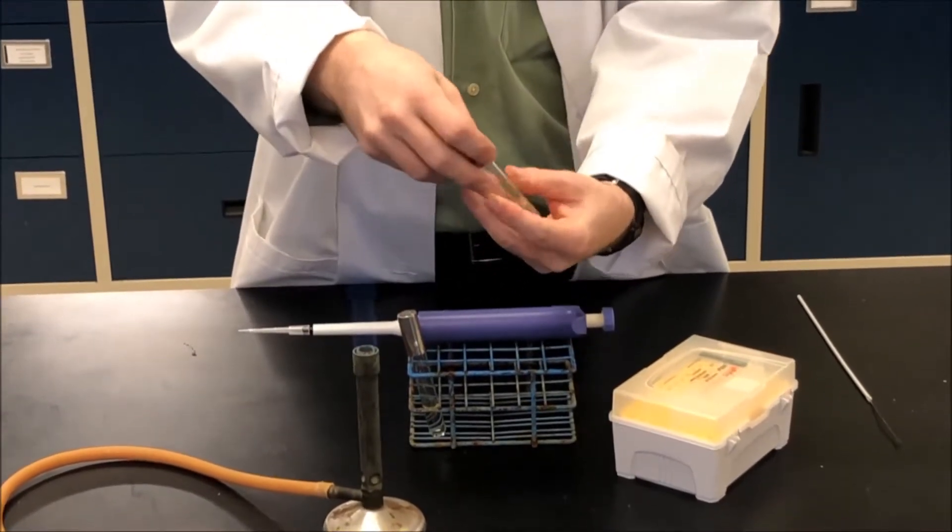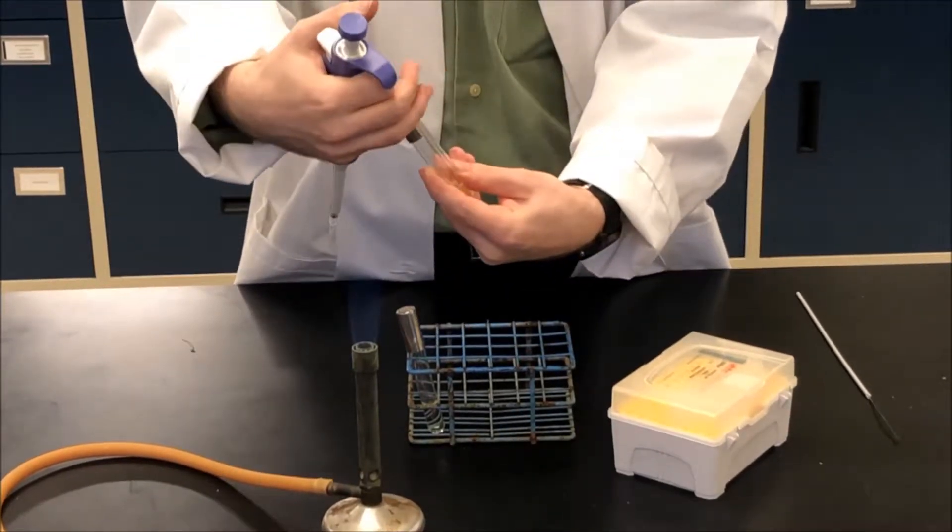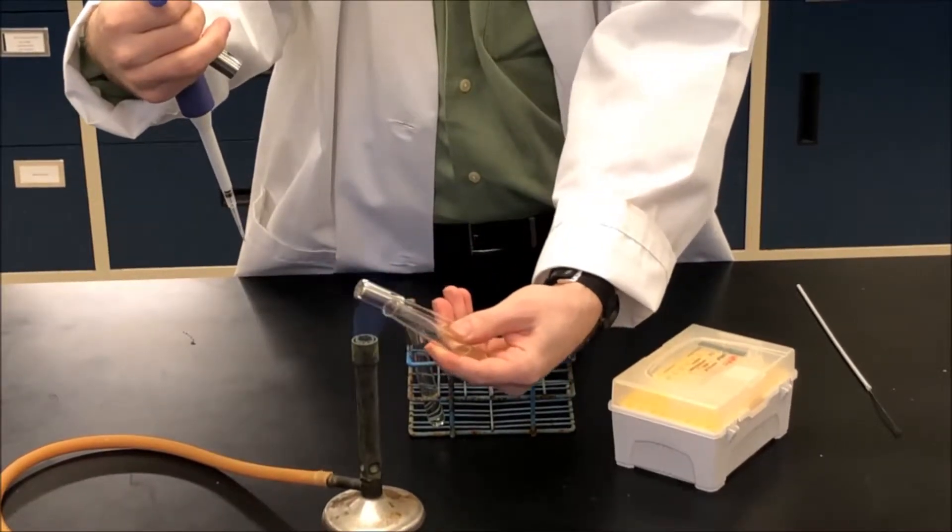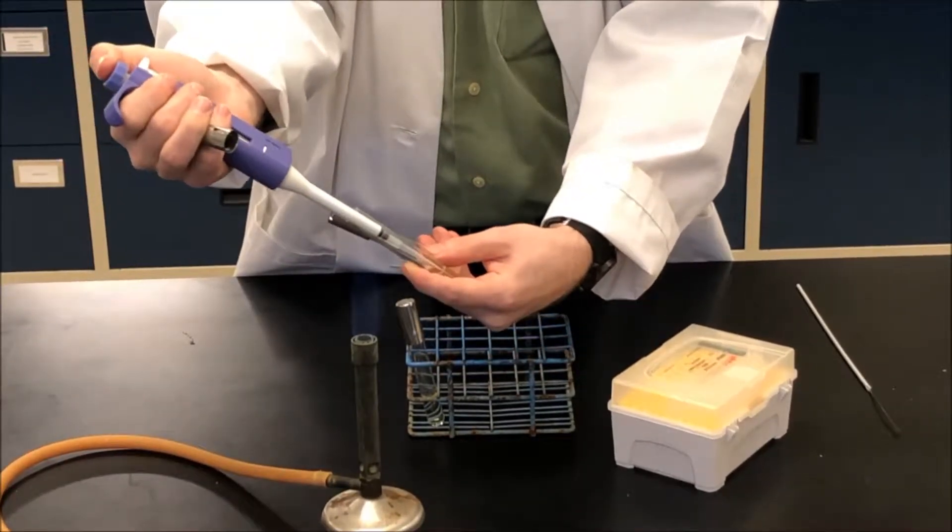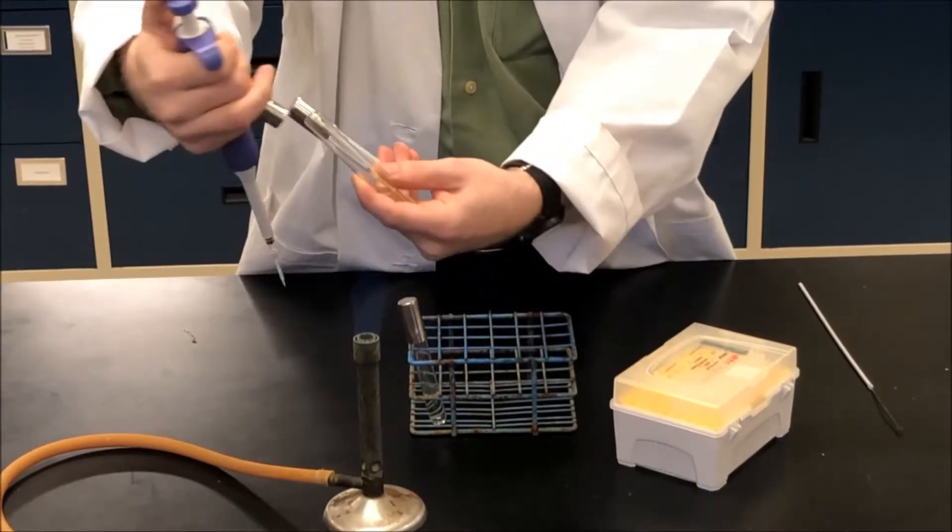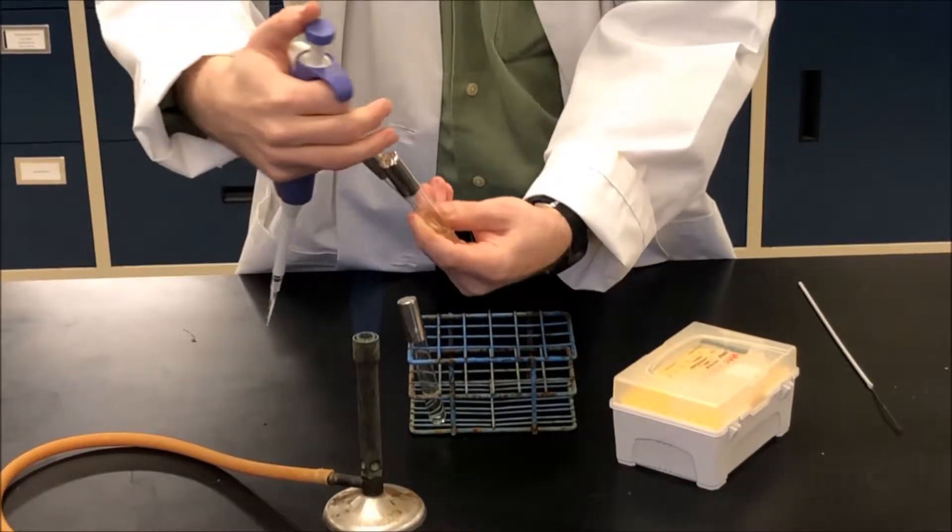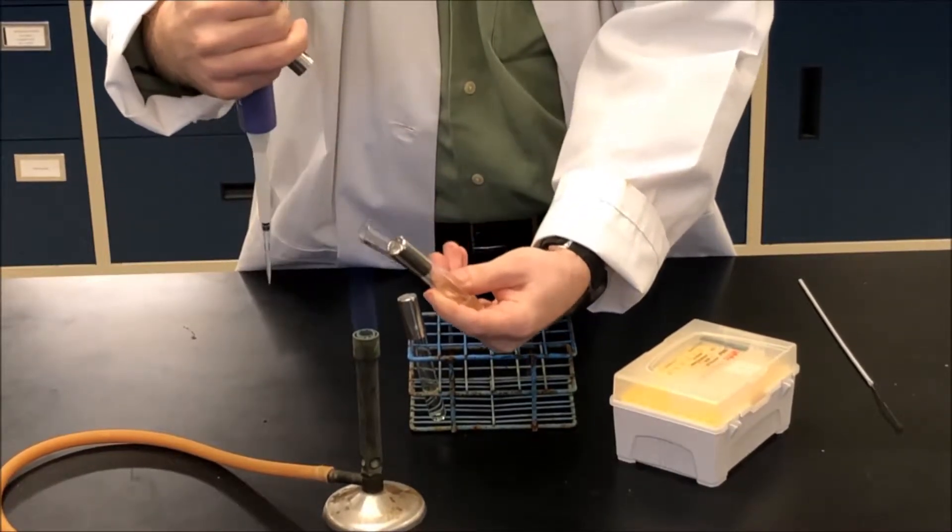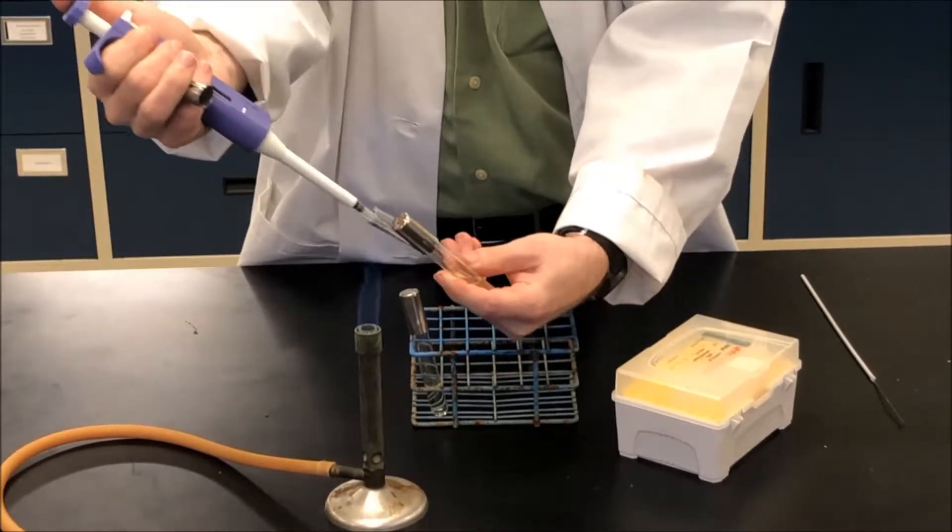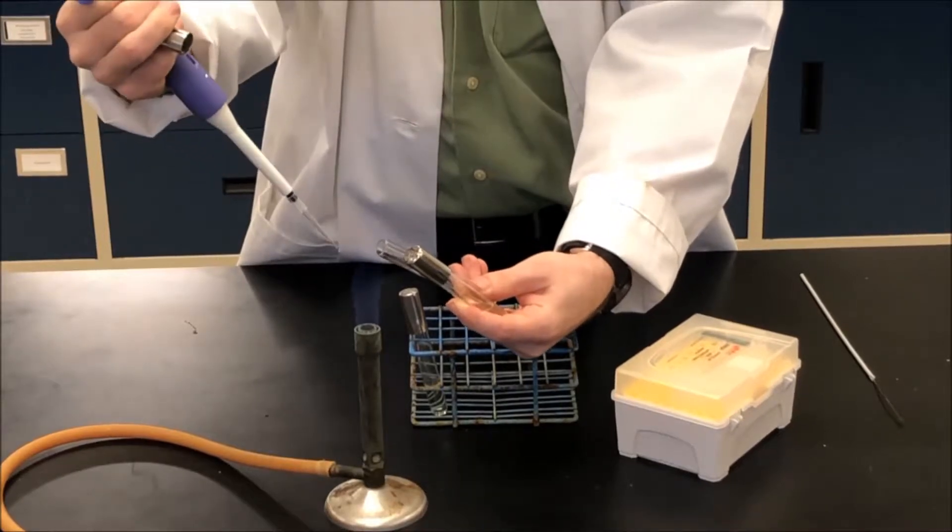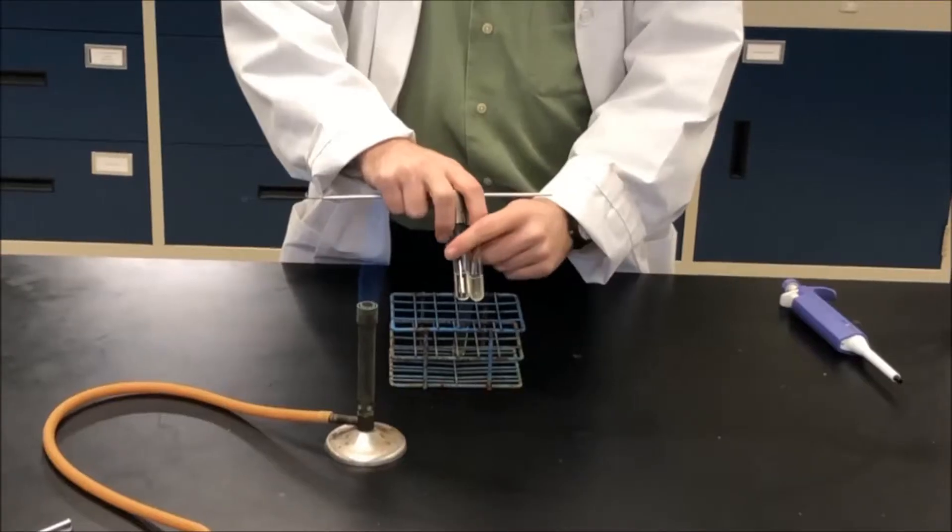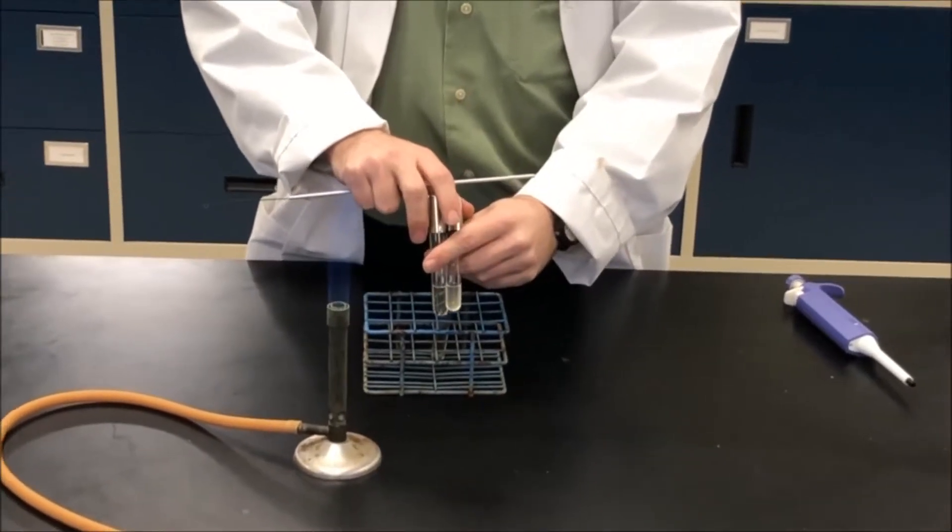I'm going to open the tube with the bacteria. I'm going to flame the lip and then take a sample, flame the lip, close my test tube, open up the test tube I want to inoculate into, flame the lip, and add my bacteria, flame the lip, and close the tube. So another way that we can inoculate growth cultures, besides using the micropipetter, is by using an inoculating loop.